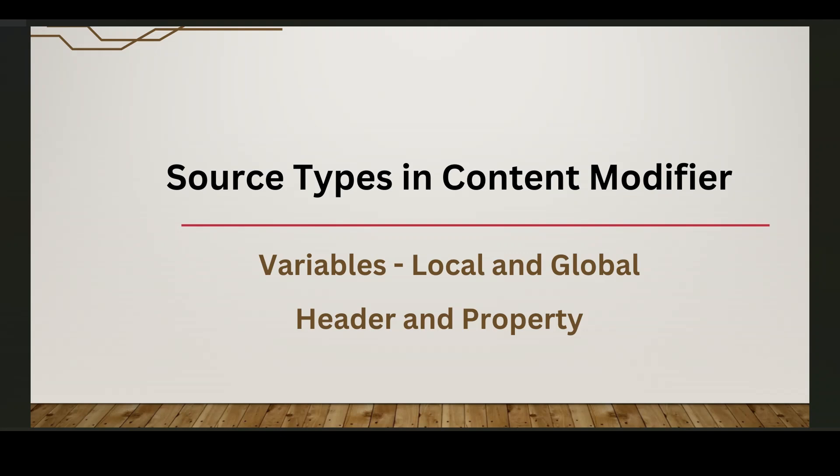Local variables are used to share data between different steps of the same integration flow. Remember the difference: local variables share data between steps of the same integration flow, whereas global variables share data between two different integration flows. Local variables are accessible only within the specific integration flow where they are defined, ensuring encapsulation of data. Consider a use case where intermediate data needs to be passed between steps within an integration flow, such as a processed message payload or a transformed value — then we can use local variables.